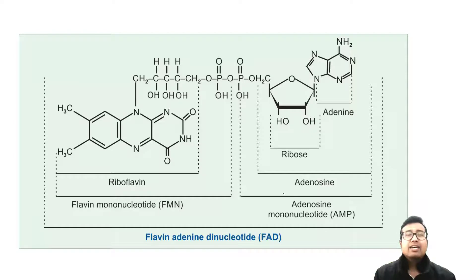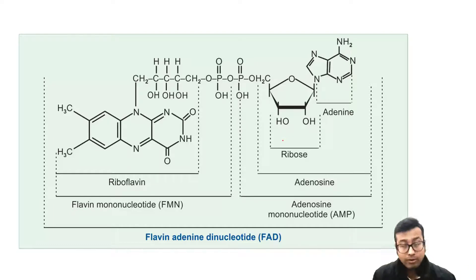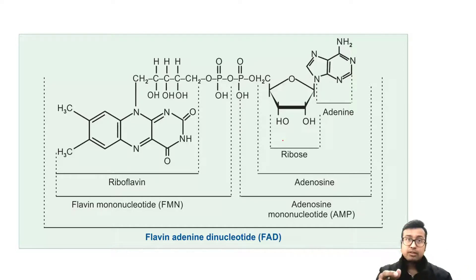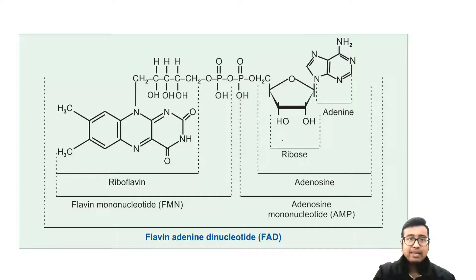This is the structure of flavin mononucleotide and flavin adenine dinucleotide. You do not need to remember unless you are preparing for AIIMS and other competitive or USMLE exams, where image-based questions are given and you need to identify these structures from options. As a first year undergraduate, you can simply skip the structure.